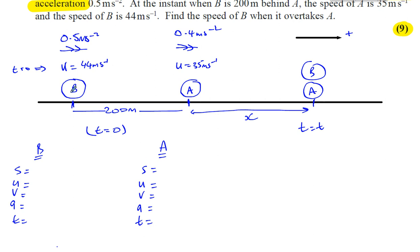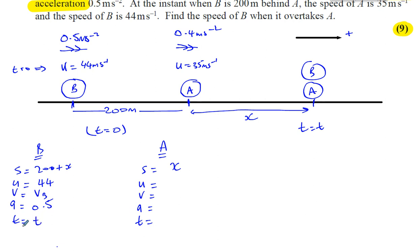The distance B has traveled between time equals zero and time T is 200 plus X. The distance A has traveled is just X. The initial speed of B was 44 meters per second; the acceleration of B is 0.5 meters per second squared, and time is T. The initial speed of A is 35 meters per second, the acceleration is 0.4 meters per second squared, and time is the same T.